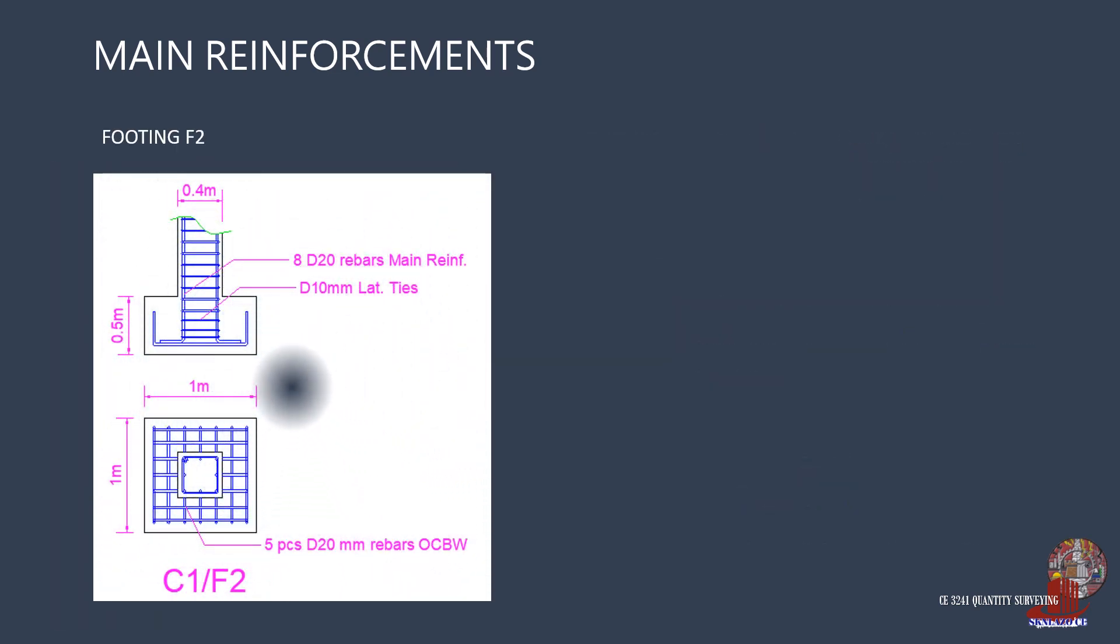The rebars required for footing F2 are 5 diameter 20mm OCBW. Again, this means that there are 5 longitudinal and 5 transverse bars needed, totaling to 10 D20 RSB per F2 footing.